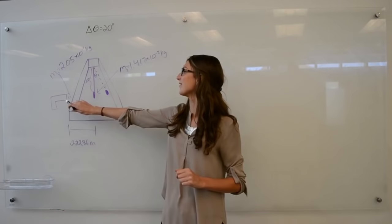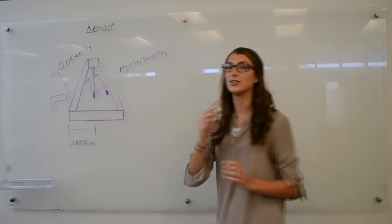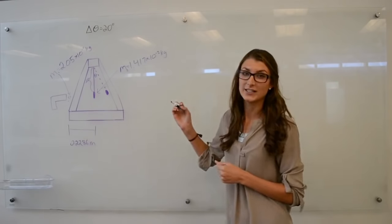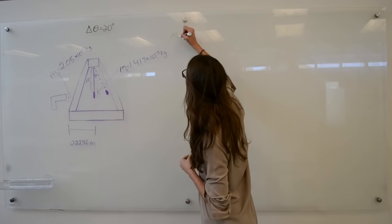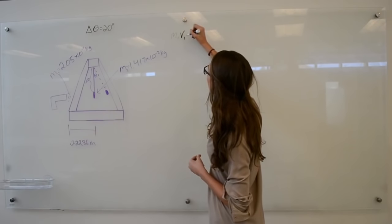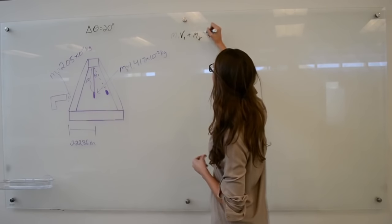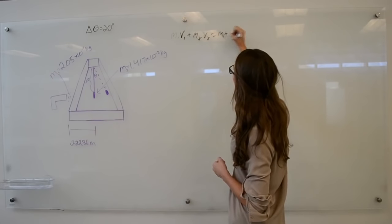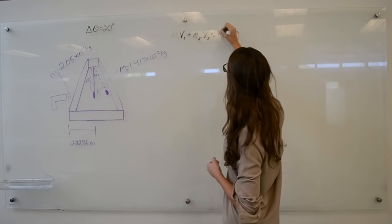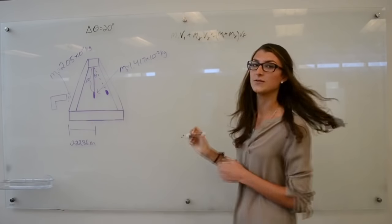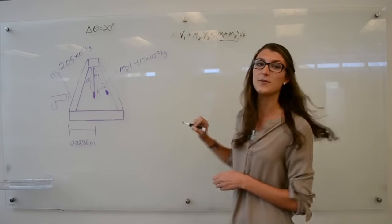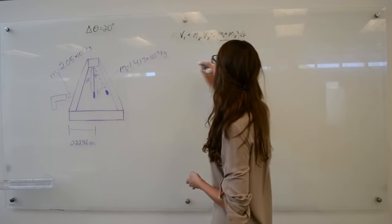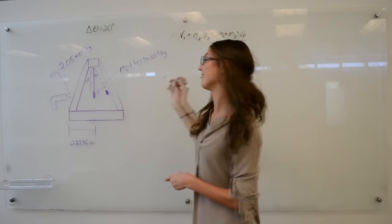We're going to be calculating the velocity of the bullet using two lenses: one is momentum and one is energy. For momentum we know that M1V1 plus M2V2 equals M1 plus M2 times VF, since these two stick together because it's an inelastic collision. To find VF we're going to use the lens of energy.